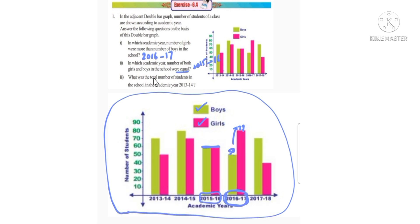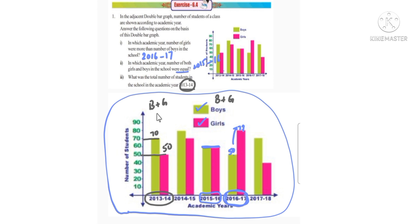Next question: what was the total number of students in the school in the academic year 2013 to 14? We need to add boys and girls. Observing the scale, boys are around 70 and girls are around 50. So boys plus girls: 70 plus 50 equals 120. Total number of students in 2013 to 14 is 120.